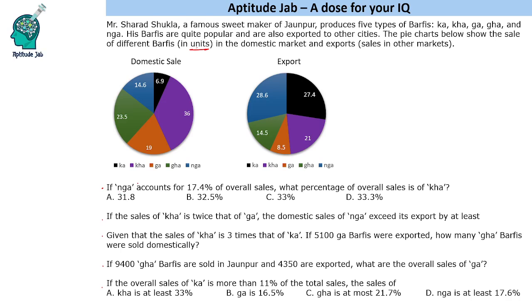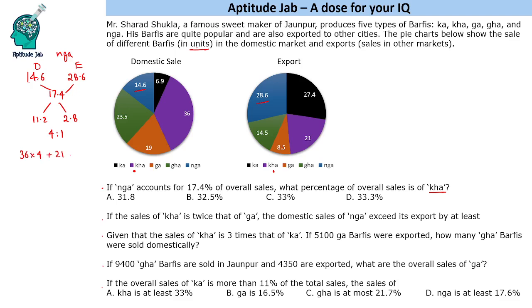So how we use allegation: if you look at Ng, in domestic it is 14.6% and in this export market it is 28.6%, and overall it is 17.4%. When we take the difference, it is 11.2% and 2.8%, which is a 4:1 ratio. So the sale ratio is 4:1. We have to find the sales of Kha — the purple one — which is 36 here (domestic) and 21 (export). So domestic will be 36×4 and export 21×1, divided by 5. This gives us 144 plus 21, which is 165 divided by 5, that is 33%. So the answer is 33%.